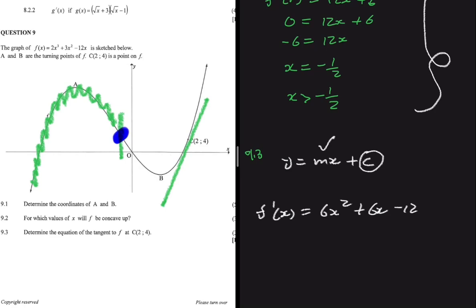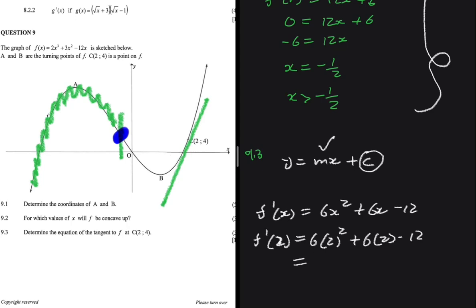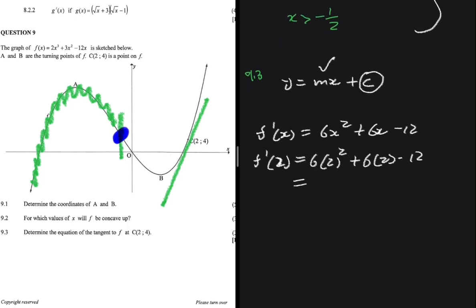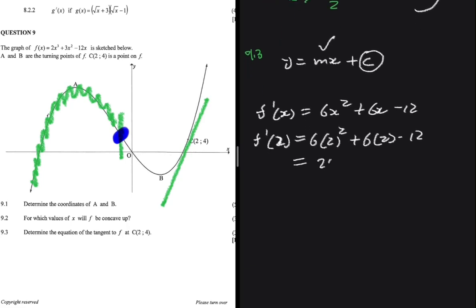Substituting x = 2 into f′(x): f′(2) = 6(2)² + 6(2) − 12. Computing that gives a gradient of 24.